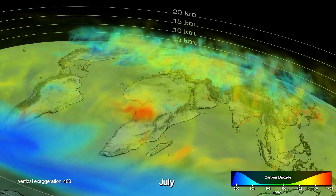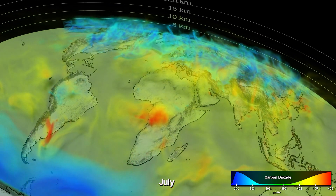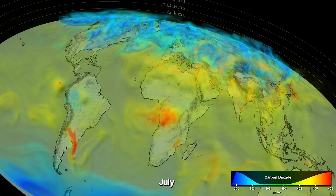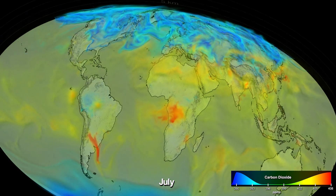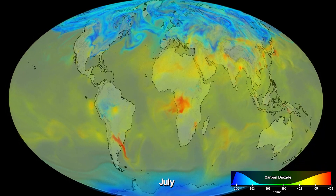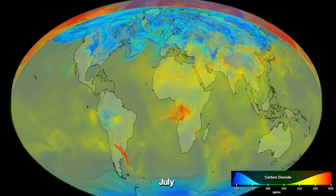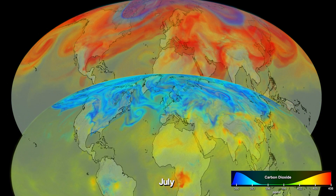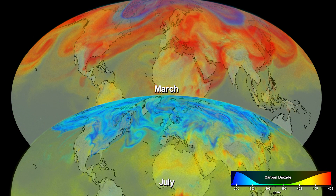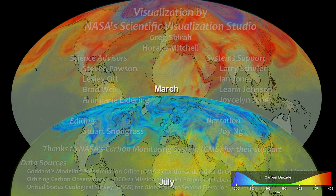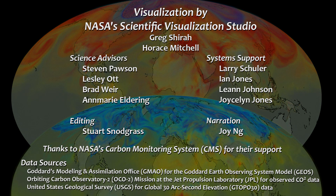The growth and decay of vegetation in northern lands cause the seasonal change in atmospheric carbon dioxide seen here between March and July. While seasonal changes in vegetation growth control CO2 on monthly timescales, human activities govern long-term carbon dioxide trends.